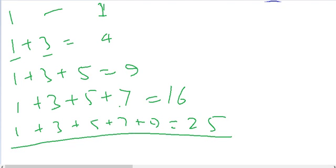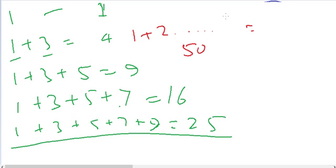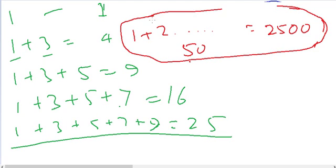This is a very useful property and you can prove it using the summation formula — it's straightforward. For example, if you have the sum of the first 50 consecutive odd numbers, the answer is 50² = 2500. You can use this formula for calculating large summations of odd number series.